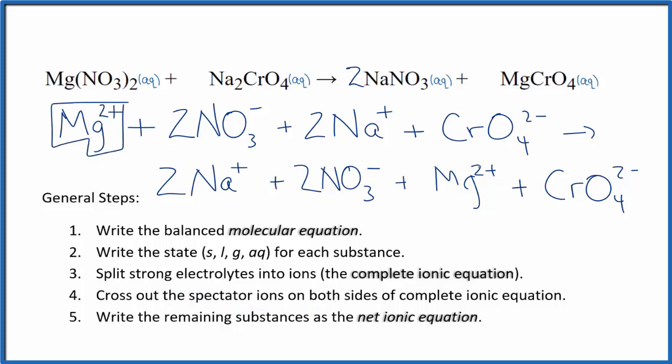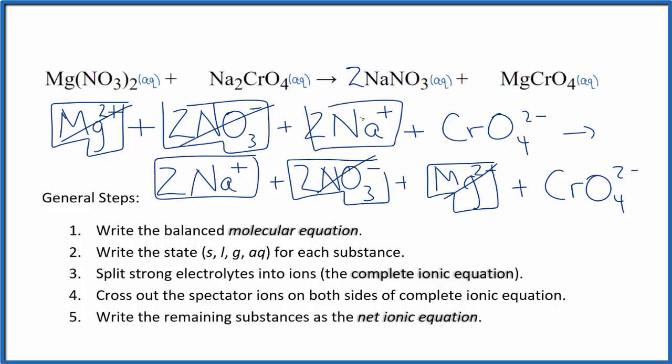I have the magnesium ion here and here, those are spectator ions, cross those out. Two nitrates here in the products, two nitrates, spectator ions. Two sodium ions, again two sodium ions. Finally, the chromate ion right here in the reactants and the products.